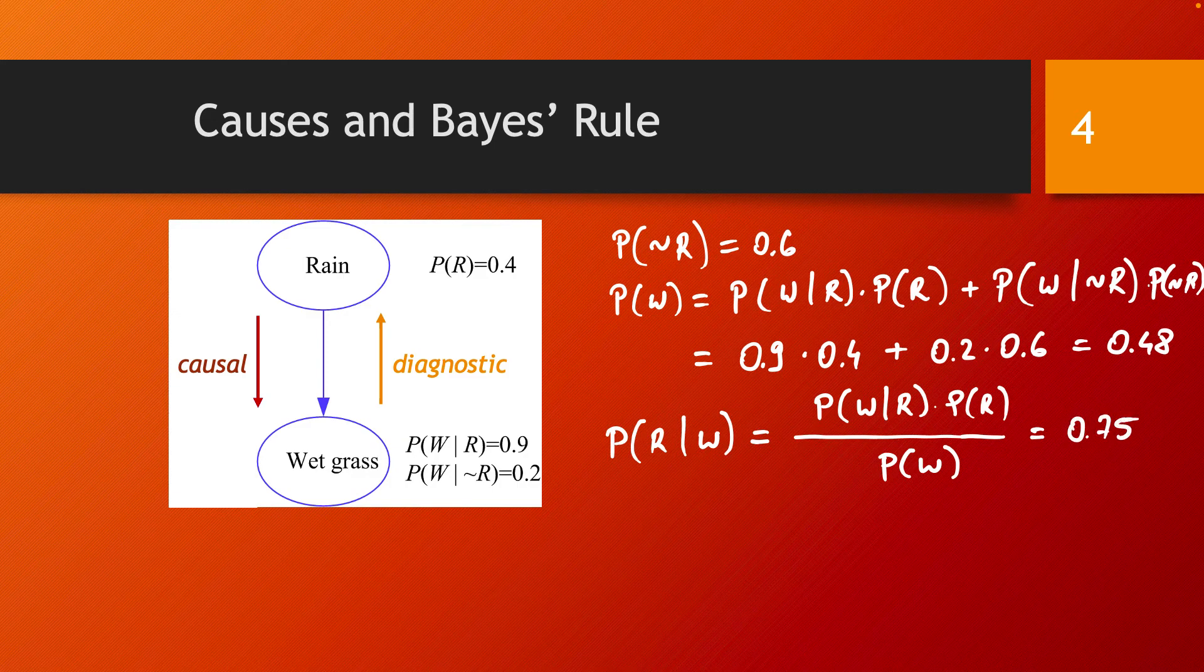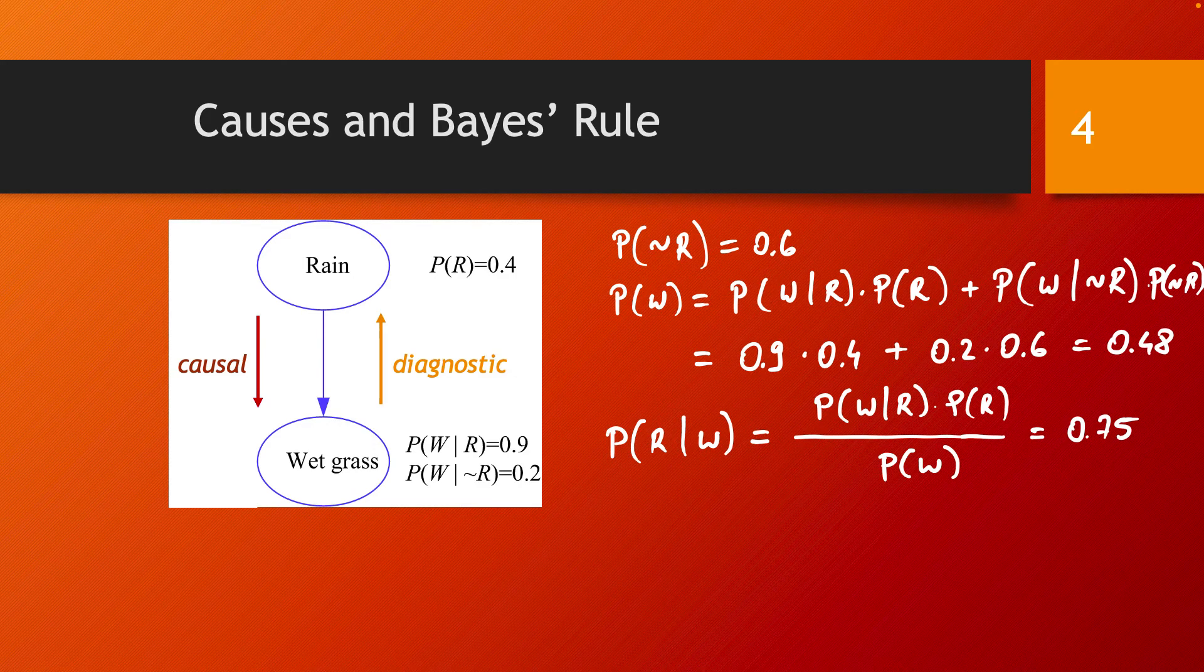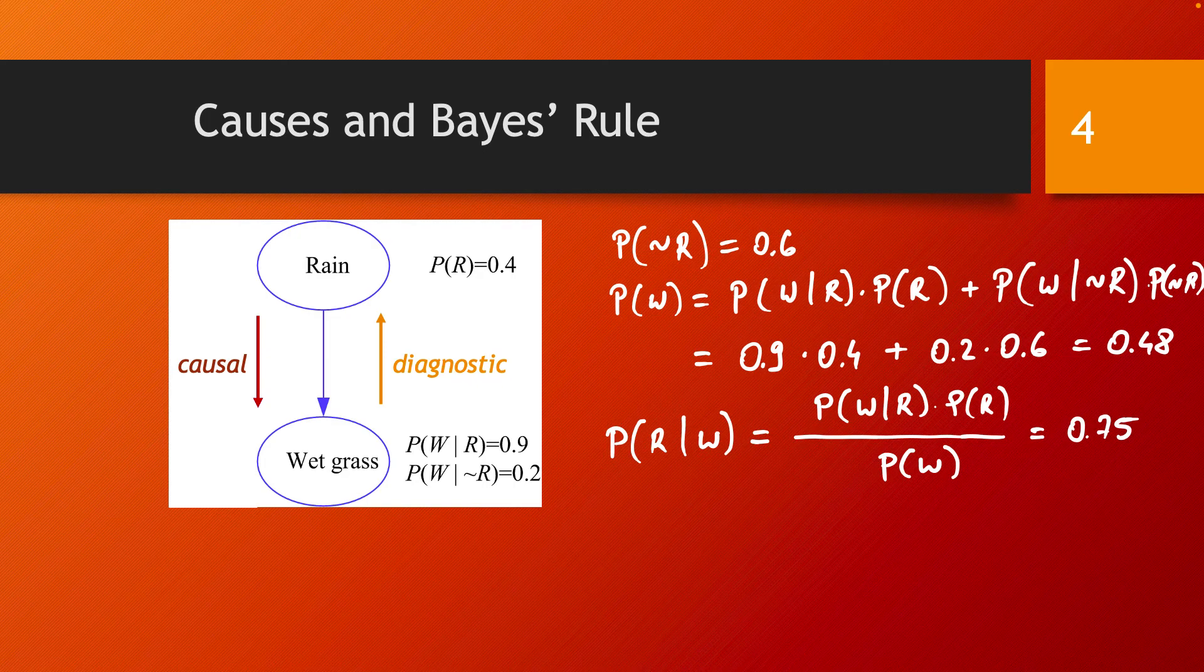So knowing that the grass is wet has increased the probability that it rained from the 0.4, which is by default given the amount of rain we get in our area, to 0.75 simply because we have observed that the grass was wet on that day.